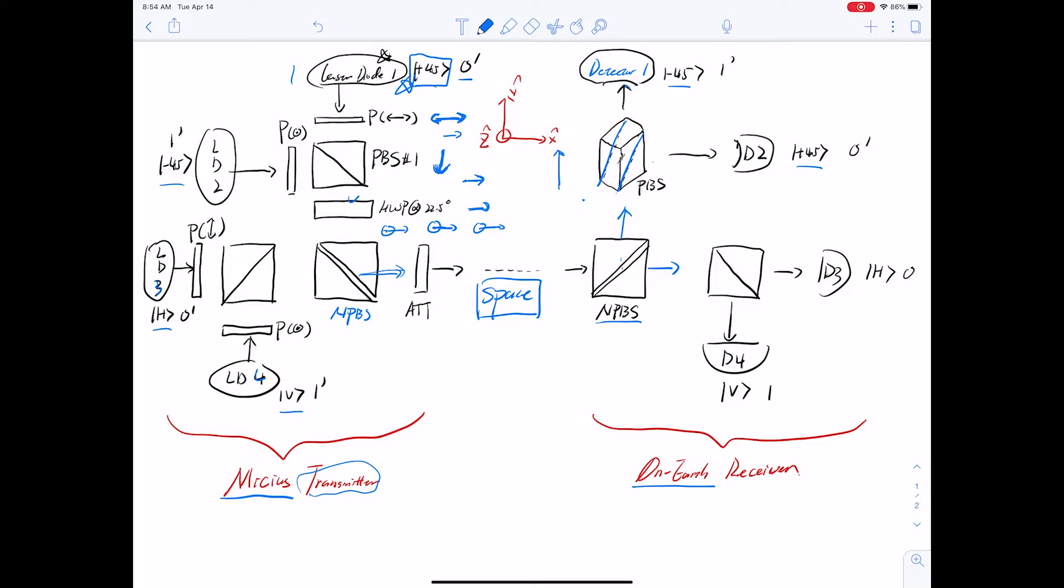That means that the in-plane component which will transmit is the minus 45 degree state along the plus X and minus Z direction, and then the plus 45 degree state will reflect and be detected here at detector two. So to wrap up, if laser diode one is fired on the receiver, and if it goes up to the correct basis, it will be 100% detected at laser detector two.